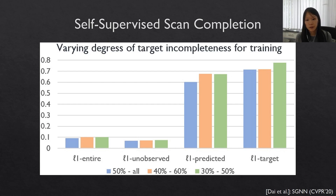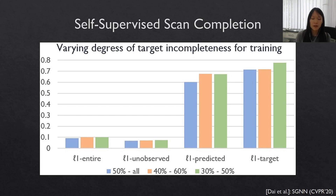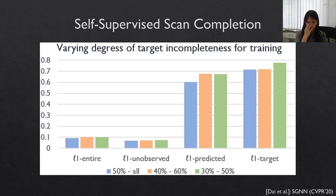We can also look at the effect of the degree of target incompleteness for the training scans. The blue line represents all frames available as target supervision versus 50% of frames for the more incomplete input. Orange represents 40% of frames for input and 60% for target supervision, and green represents 30% for input and 50% for target supervision. There's a small performance drop in reconstruction quality as target data becomes more incomplete, but the approach is fairly robust — if we can establish patterns between more incomplete and less incomplete observations, we can still effectively generate geometry in these regions.